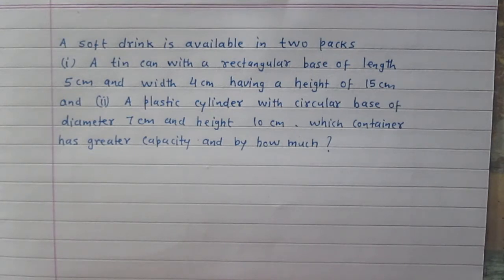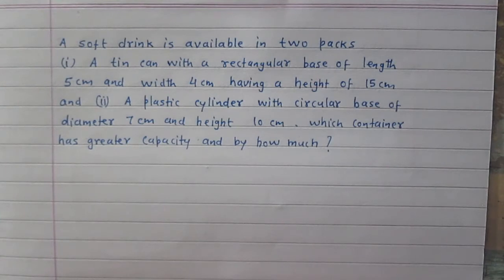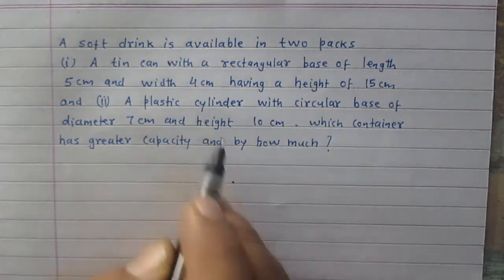In this question we are given two types of solids. The first is a cuboidal solid and the second is a cylindrical solid. We are to find their volumes and compare them.